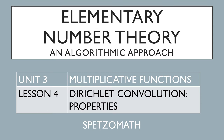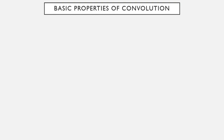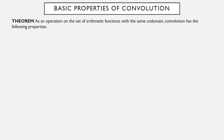In the previous video we defined the Dirichlet convolution of two arithmetic functions and worked through a couple of examples. In this video we'll see what properties this new operation has. As an operation on the set of arithmetic functions that have the same codomain, a convolution has the following properties.